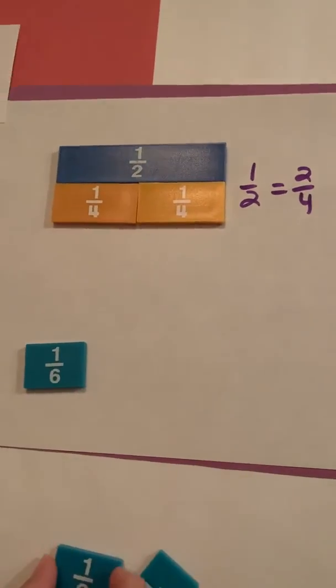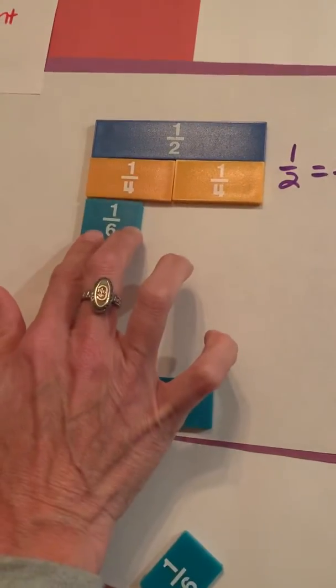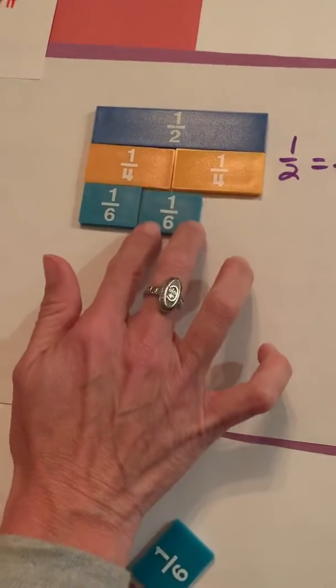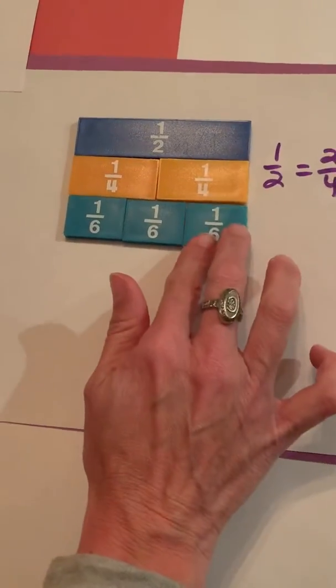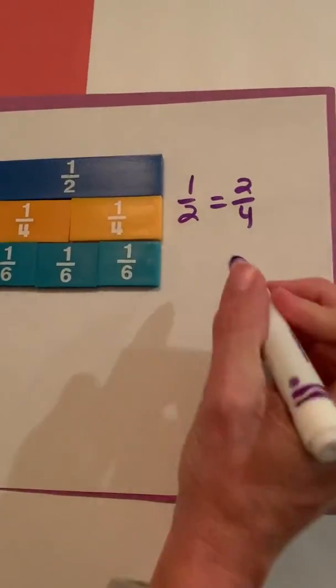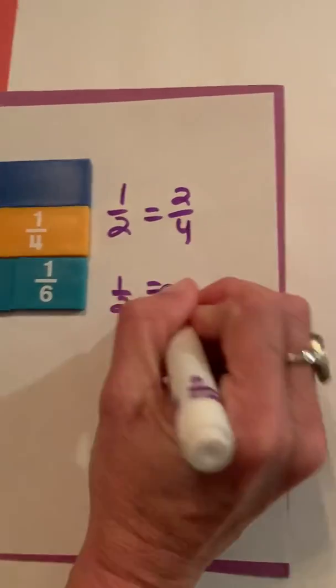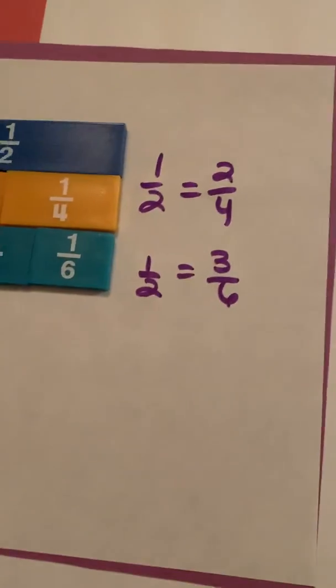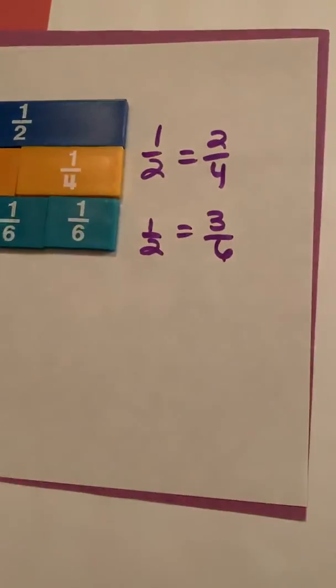Let's try some sixths here. I've got one sixth, two sixths, and three sixths. So yes, I can say that one half is equal to three sixths, and also three sixths is equal to two fourths.